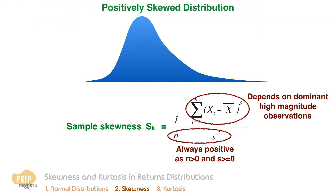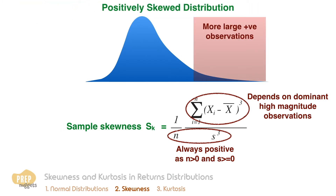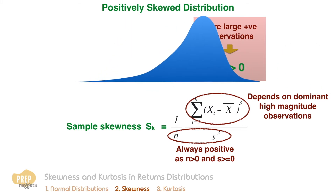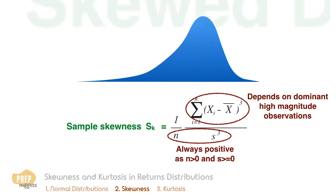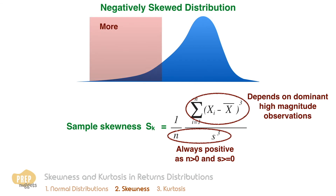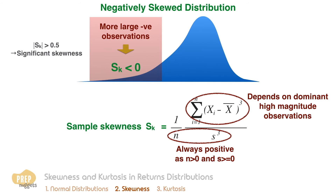Hence, for a positively skewed distribution, the positive values are more dominant, causing the skewness measure to be positive. The reverse is true for a negatively skewed distribution — the negative values are more dominant, so the skewness measure is negative. Skewness values in excess of 0.5 indicate significant levels of skewness.